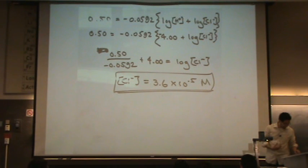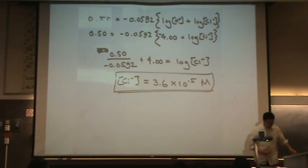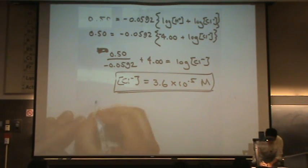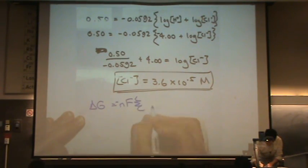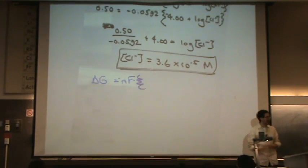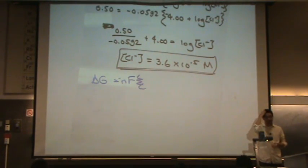Okay, next it says to find delta G. This one's quite a bit easier. Find delta G. Delta G is just minus N, F, E, like that. And we're not finding delta G standard. We're just finding delta G.